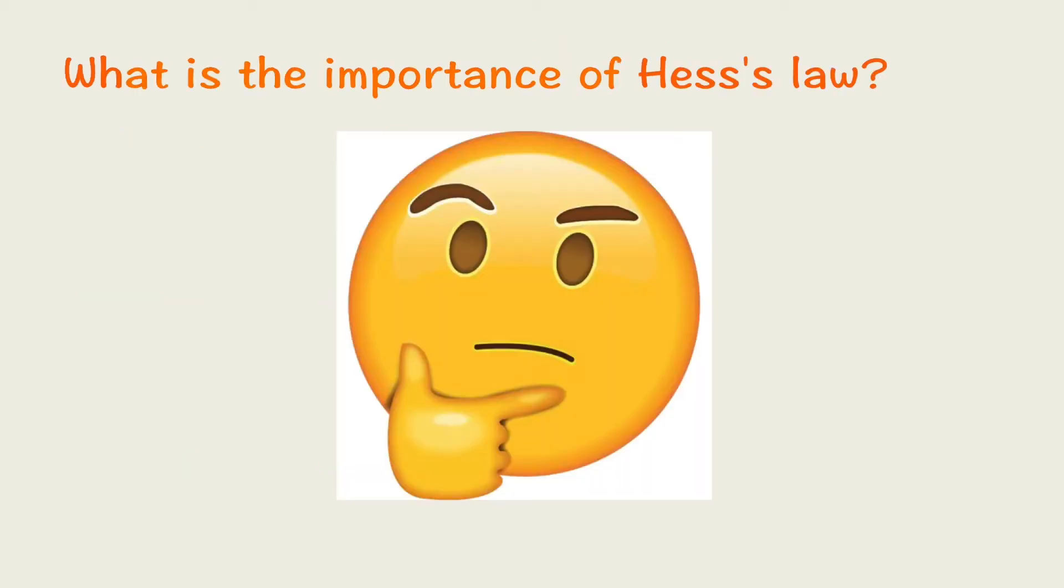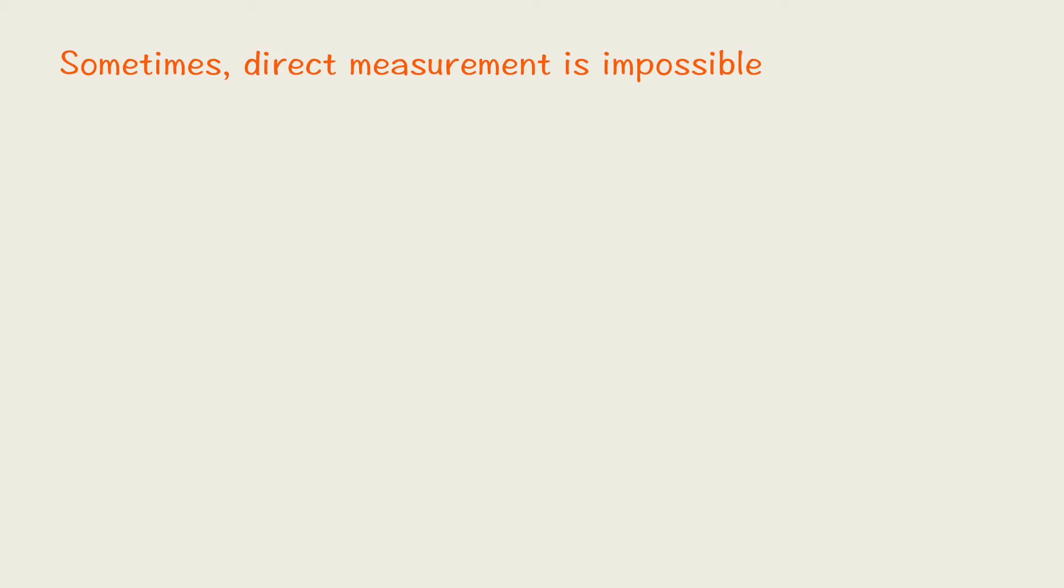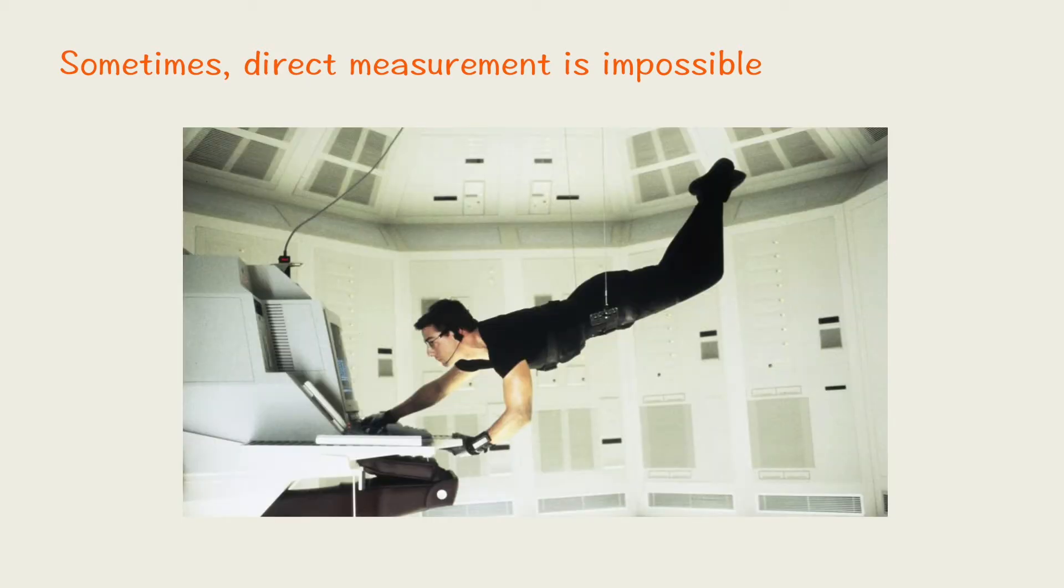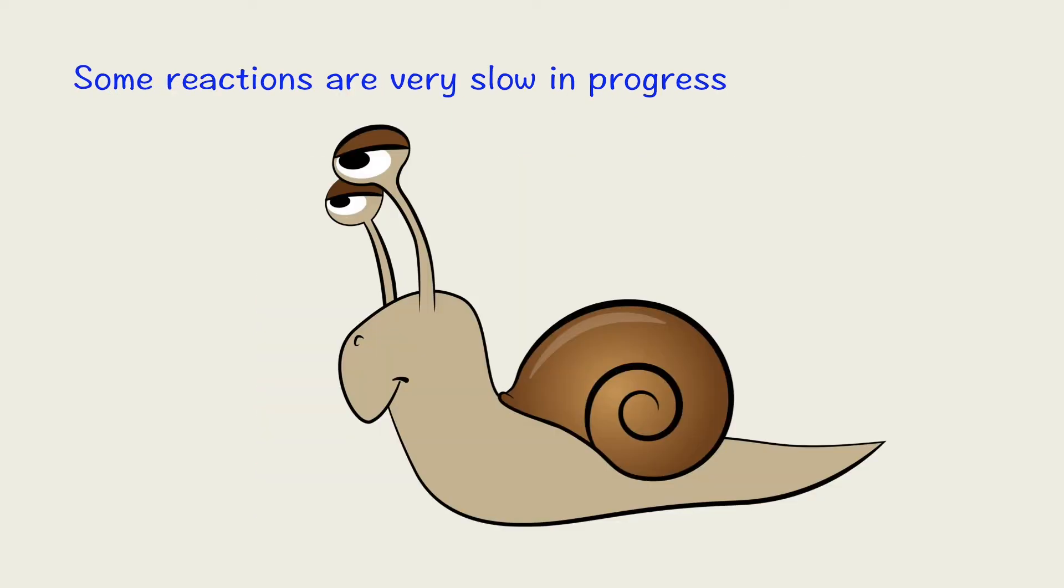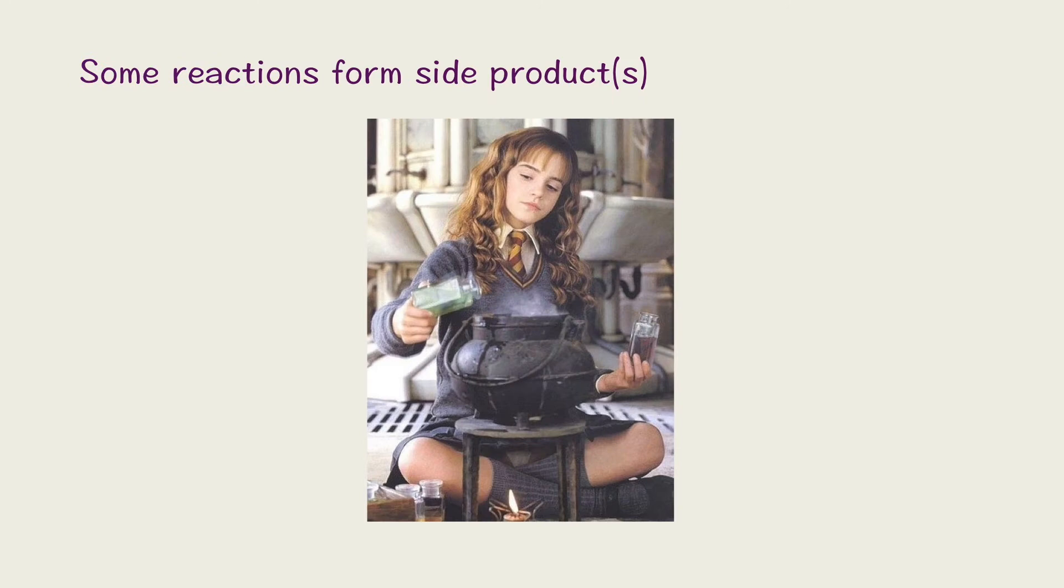So what is the importance of Hess's Law? Why we should learn this? This is because sometimes the direct measurement of the enthalpy change is impossible. What kinds of measurement we cannot do? The first one is the reaction is too exothermic or rigorous or even worse the reaction is very slow in process. The third one is sometimes the reaction forms a lot of side products or sometimes the reaction will not start automatically.